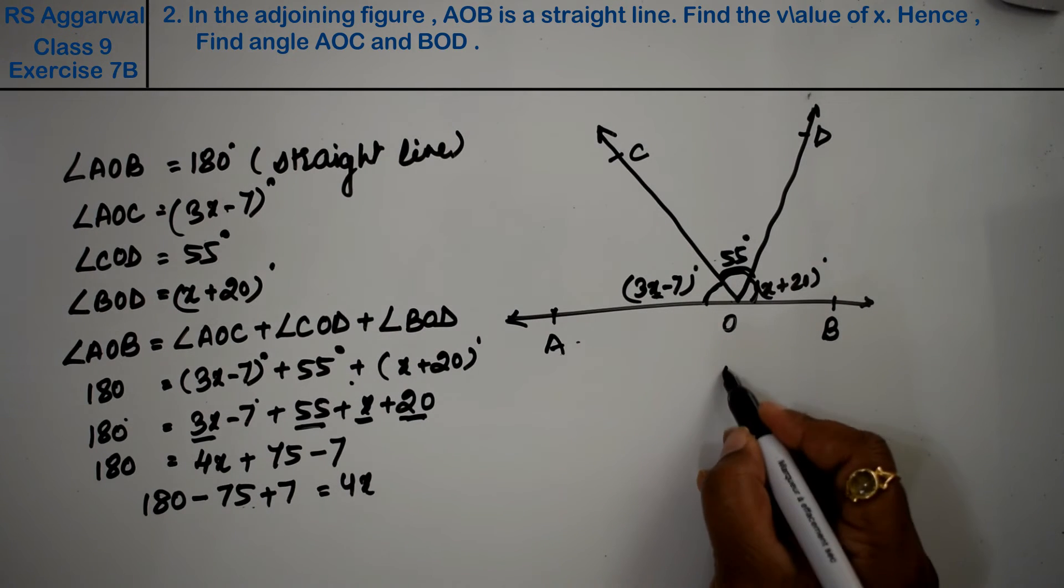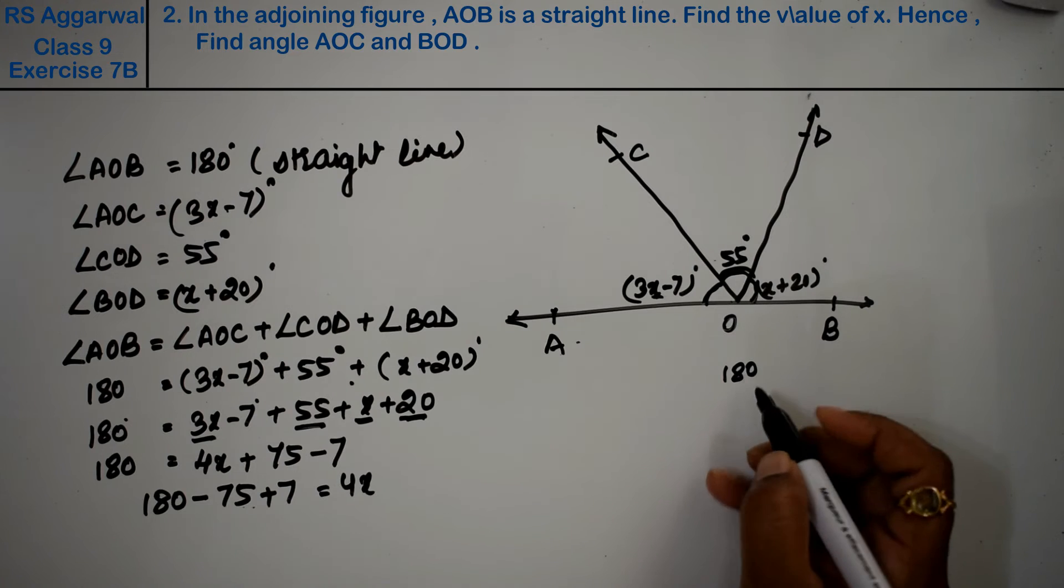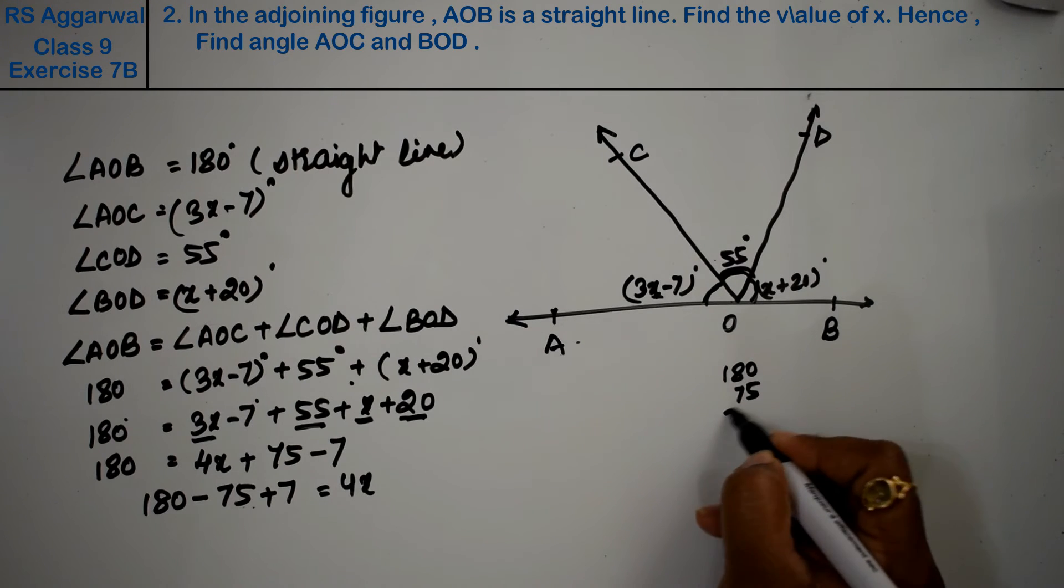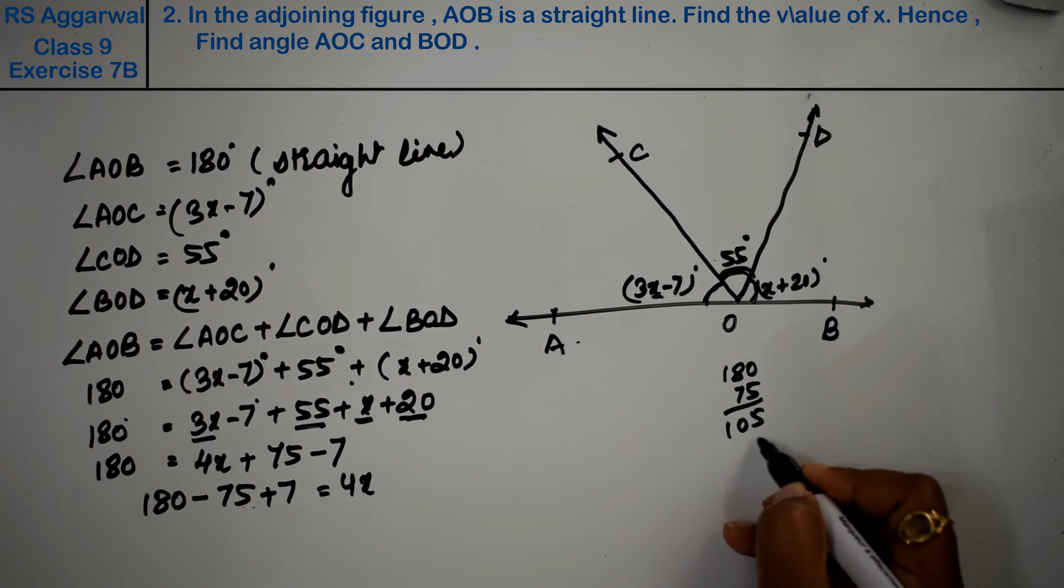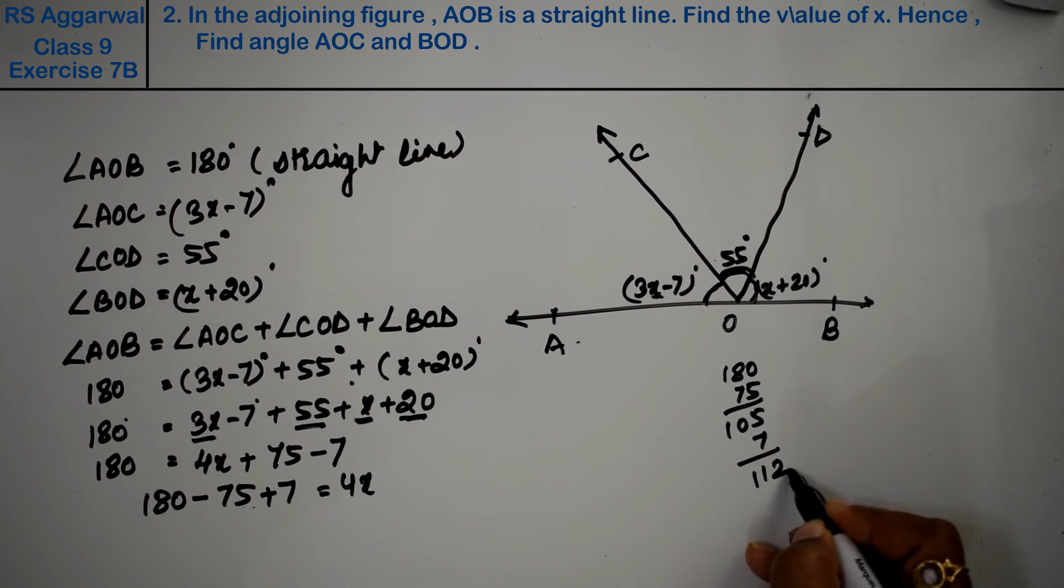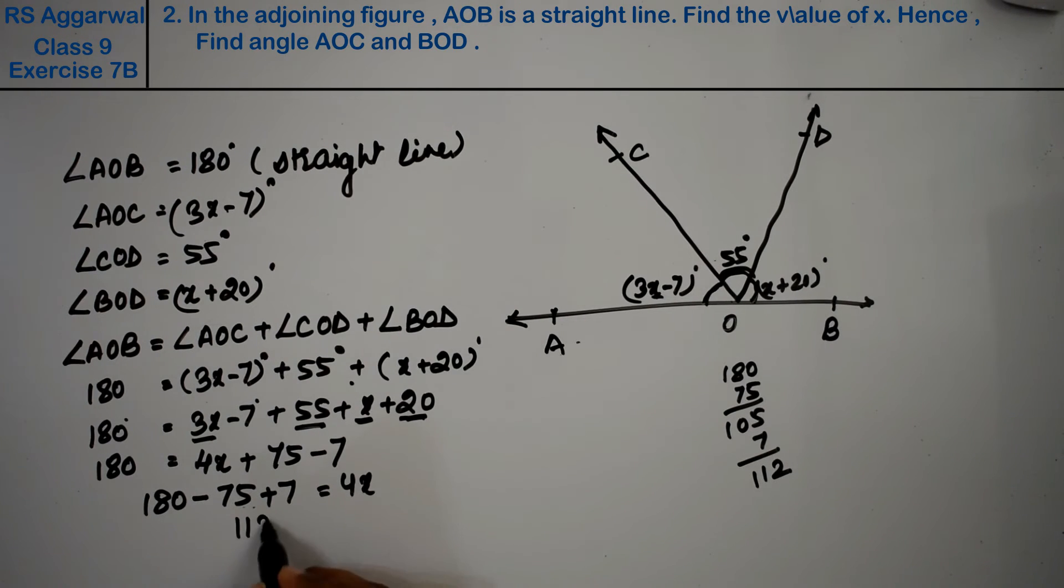Now let's see what remains: 180 minus 75 gives 105, and adding 7 gives 112. So 112 equals 4x, therefore x equals 112 divided by 4.